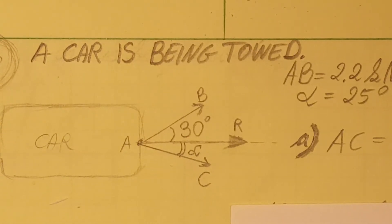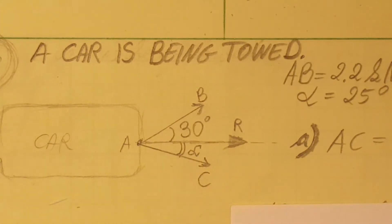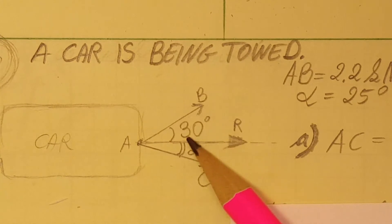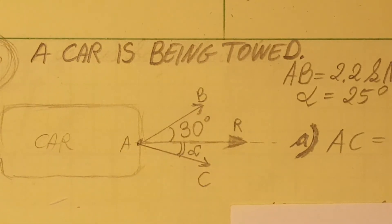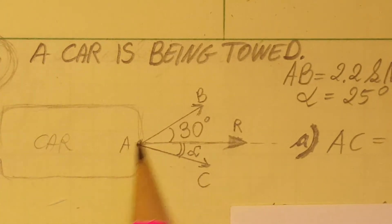On this physics problem we're going to do some vector calculations. A disabled vehicle is pulled by means of two ropes, rope AB and rope AC. The tension in rope AB is given as 2.2 kilonewtons, angle alpha is adjusted to 25 degrees, and the other angle is 30 degrees. Knowing that the resultant of the two forces applied at point A is directed along the axis, we need to determine by trigonometry the tension in rope AC, and then the magnitude of the resultant of the two forces applied at A.